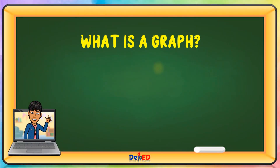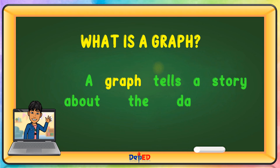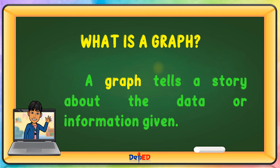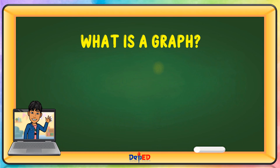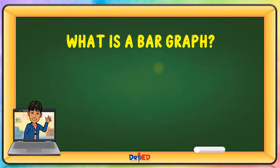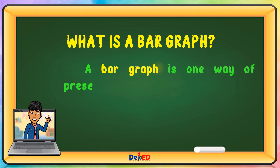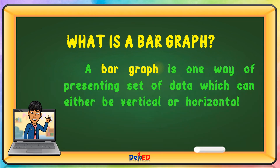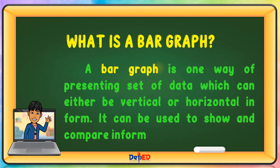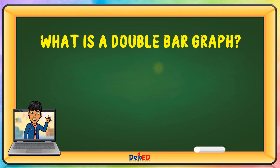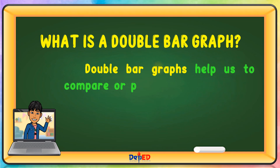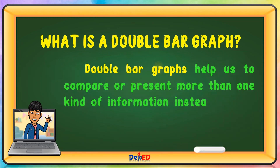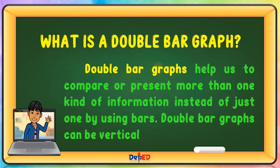What is a graph? A graph tells a story about the data or information given. What is a bar graph? A bar graph is one way of presenting sets of data which can either be vertical or horizontal in form. It can be used to show and compare information. What is a double bar graph? Double bar graphs help us to compare or present more than one kind of information by using bars, and can be vertical or horizontal.